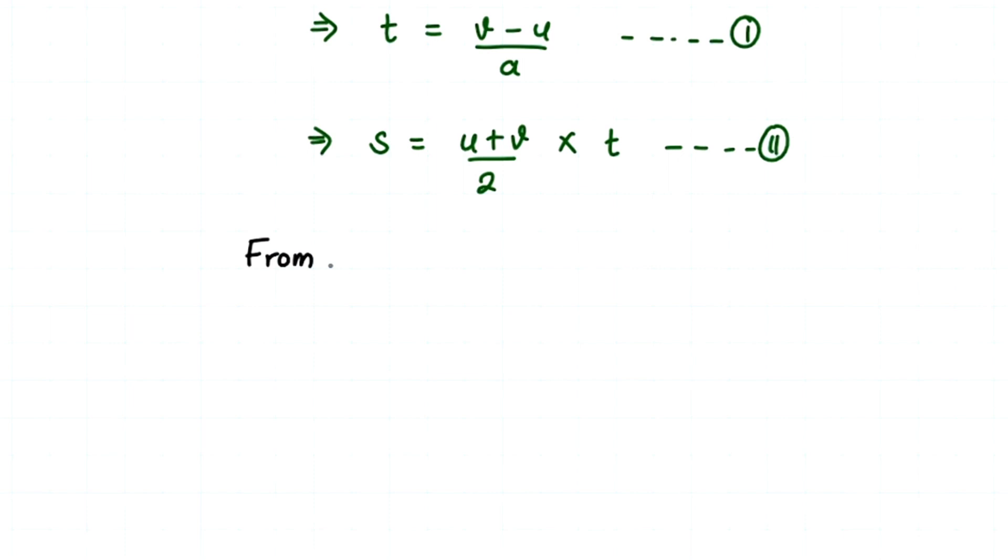Now we'll be starting from our second equation. From equation 2, we get s equals u plus v divided by 2 times t. The next thing we are going to do is replace this time with our first equation, which is v minus u by a.